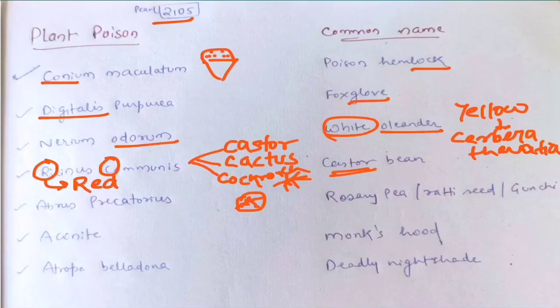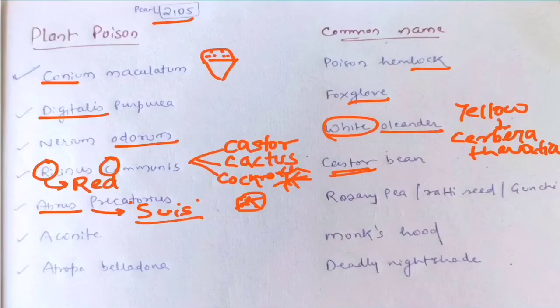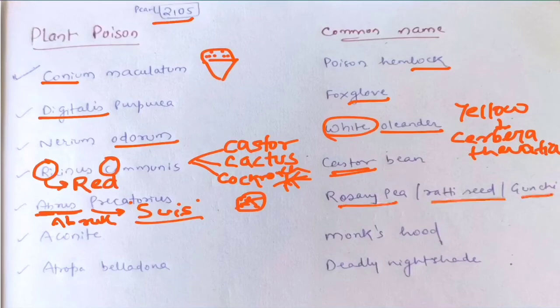The next is Abrus precatorius. It is used as a sui — a needle — for cattle poisoning. To remember it: 'a brook' — like saying to the cattle, 'I'm going to kill you with this sui.' It is also known as Ojp Rati seed and Gunji.